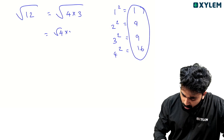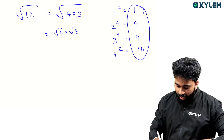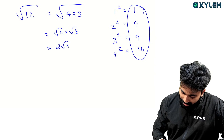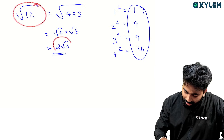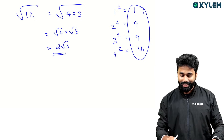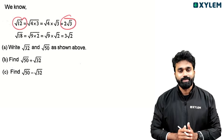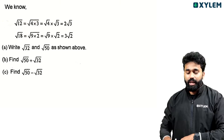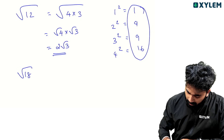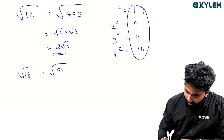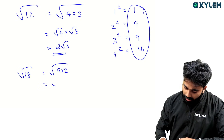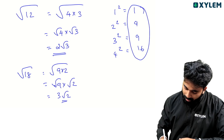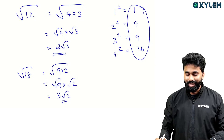This is root 4 into root 3. If we talk about root 4, root 4 is 2. So the answer is 2 root 3. If we talk about root 3, root 3 is approximately 1.73. So 2 root 3 gives us 2 times root 3. The answer is root 4. Root 8 is root 9. Root 9 is 3.